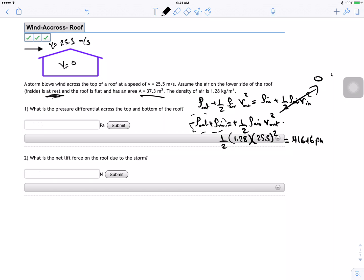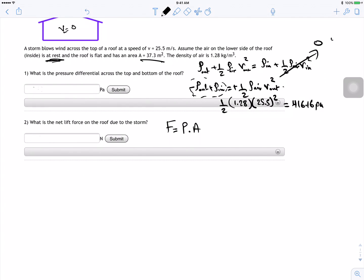And then, what's the net lift force on the roof due to the storm? We know that force equals pressure times area. So we have the area which is 37.3 and the pressure 416.16 times 37.3. For this I got 15522.76 Newtons.